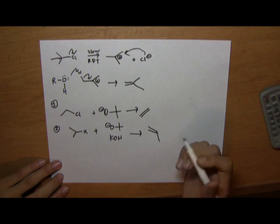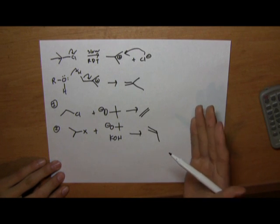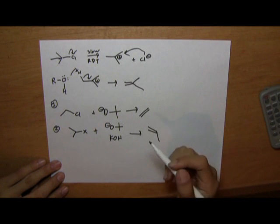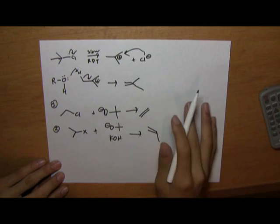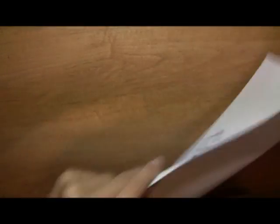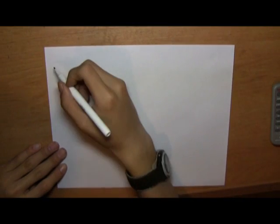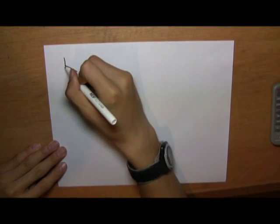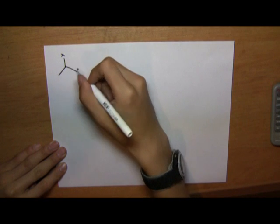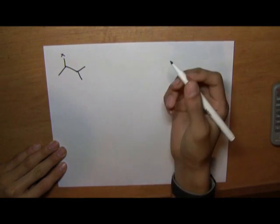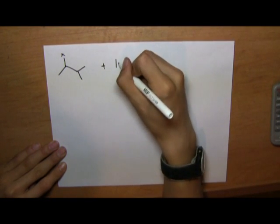Now there's something special about tertiary E2 and using hindered and unhindered bases. So let's do this. Let's start with this molecule. Now let's treat this with KOH first.